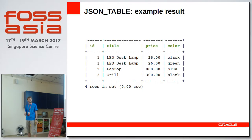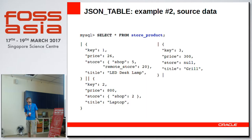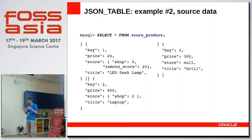The next example makes this clearer. We add another view and table, which returns data where for each product there is a store object. Each store object shows that there are five products in one shop, only two in the next shop, and for the third product there is nothing in this store.